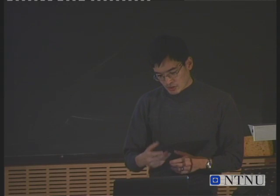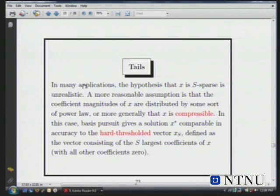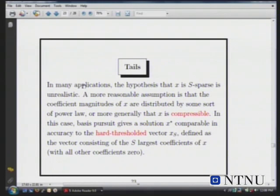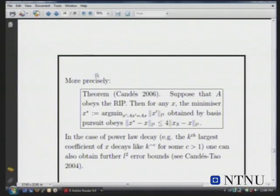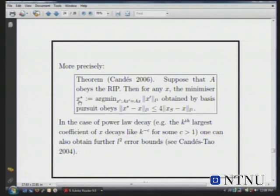The best you can hope for is what's called hard thresholding, where you keep the s largest coefficients and throw the rest away. And that we can basically do. There's a theorem that says if you have arbitrary data with an arbitrary tail and you have this RIP property,